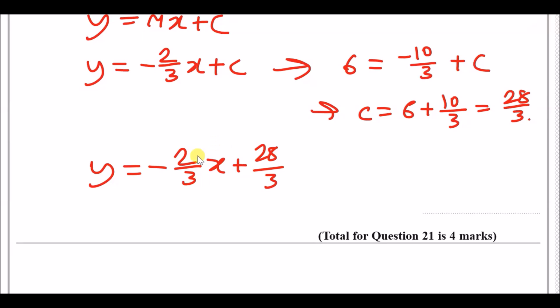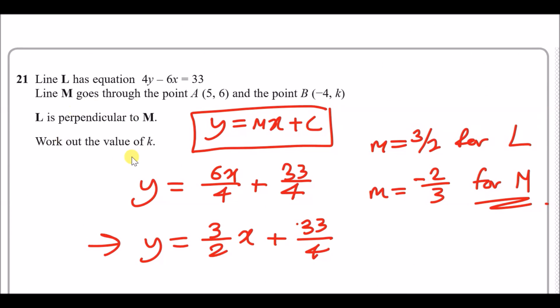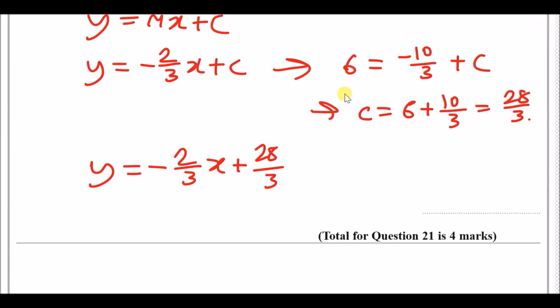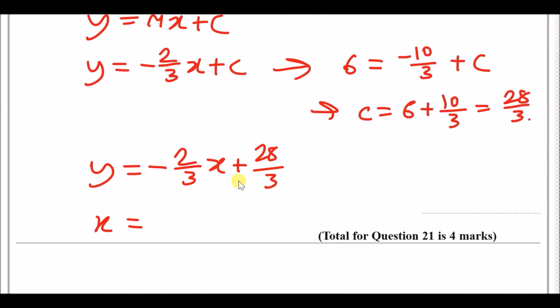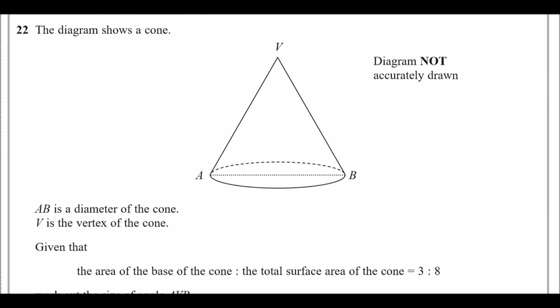The equation of line M is therefore y equals minus 2/3 x plus 28/3. To find the value of k at point B, substitute x equals minus 4: k equals minus 2/3 times minus 4 plus 28/3, which is 8/3 plus 28/3. Adding those gives k equals 12.